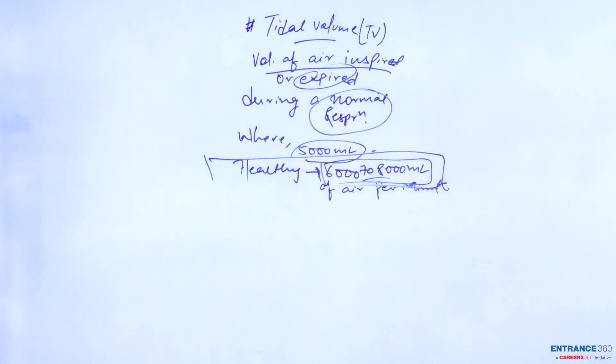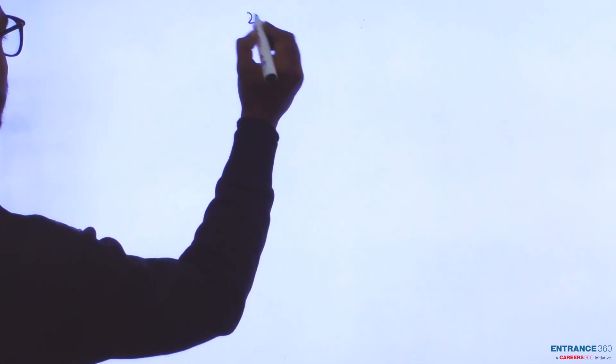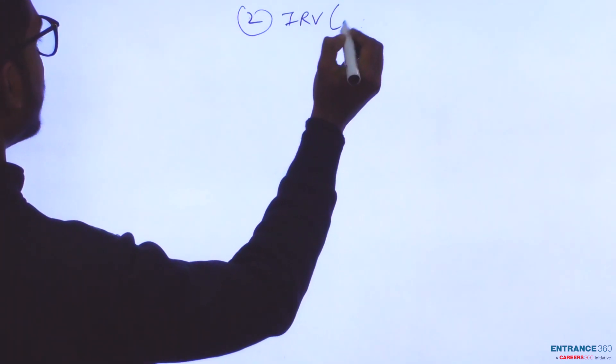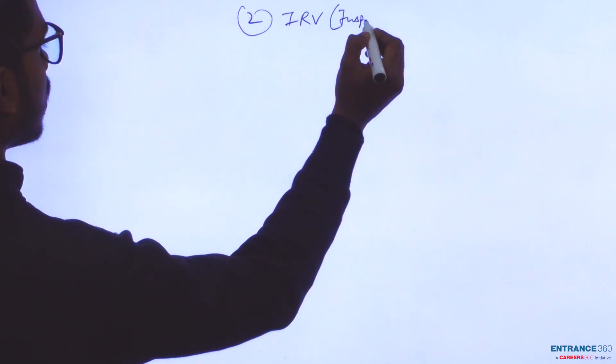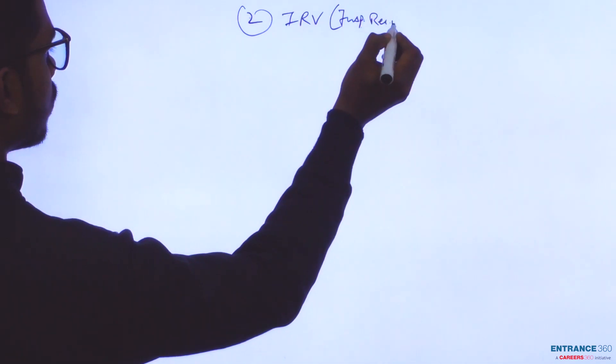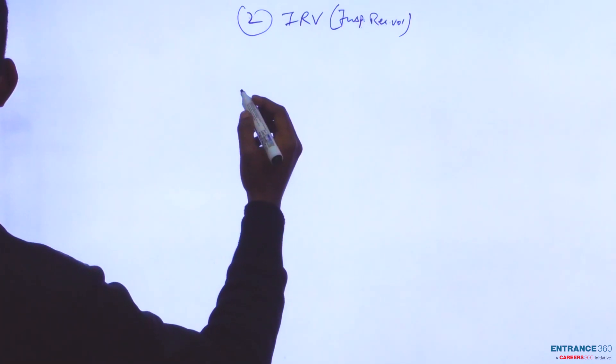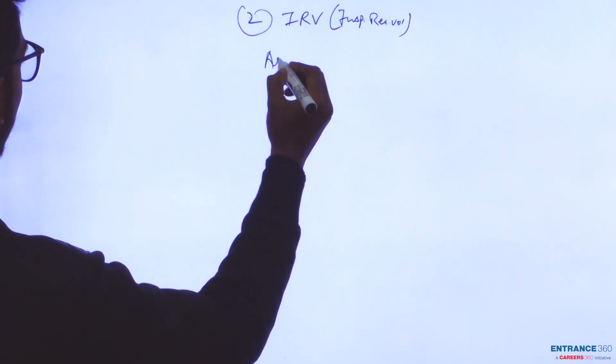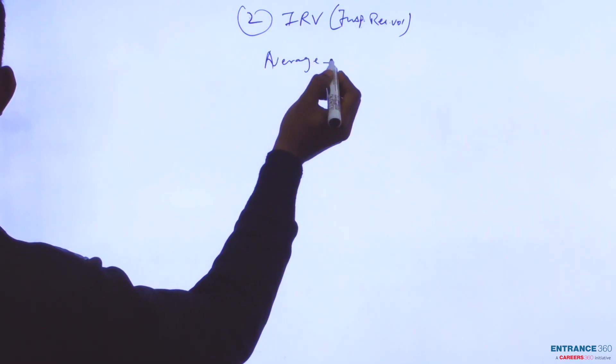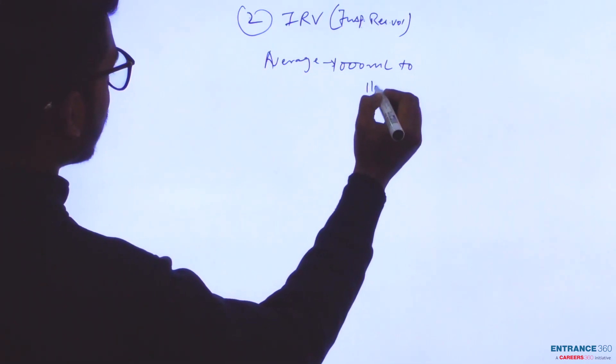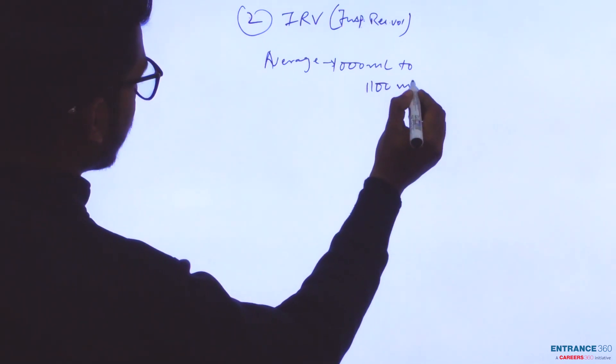The second option in the column is IRV, Inspiratory Reserve Volume. The average is approximately 1000 to 1100 ml.